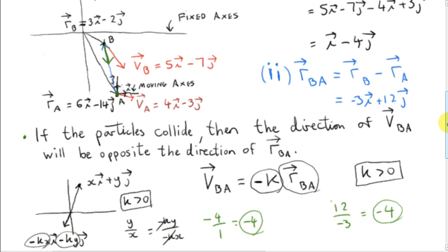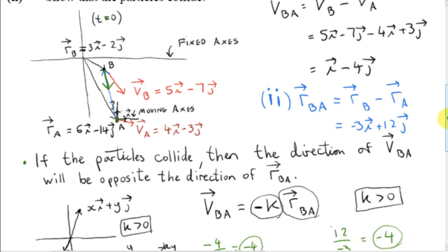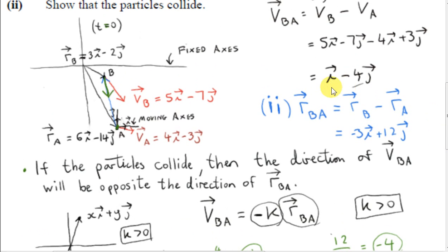And minus 4 over 1 is the same as plus 12 over minus 3. Therefore, vector VBA points in a direction opposite to vector RBA. And that's the condition for the particles to collide. So it is the case that these two particles will collide.